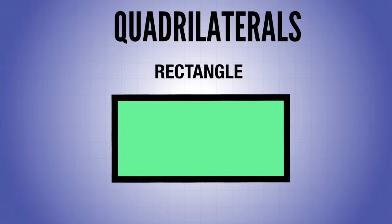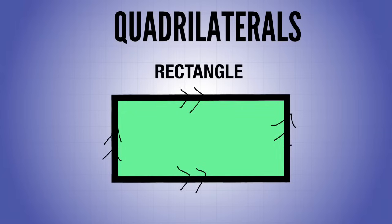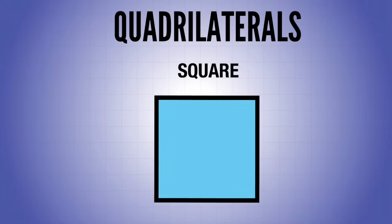The rectangle is a parallelogram with four right angles. This line is parallel with this line, and this line is parallel with this line, but it also means we have four right angles — one, two, three, four. That's what makes it a rectangle.